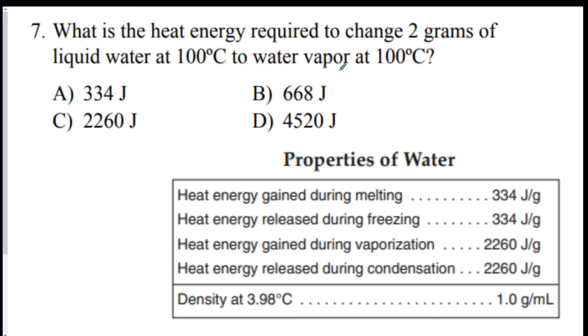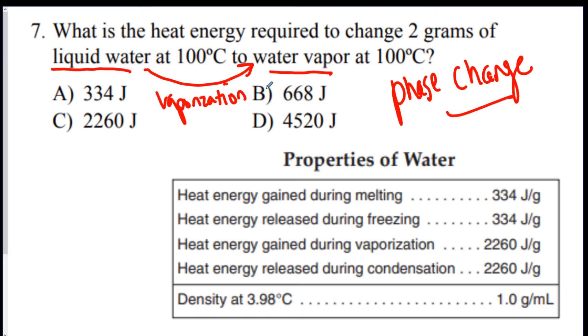Number 7, what is the heat energy required to change 2 grams of liquid water at 100 degrees Celsius to water vapor at 100 degrees Celsius? Now, the reason this is not like the other one is because there is a phase change in this question. The phase change is going from liquid water to water vapor. And if you know your phase changes, this is called vaporization. So, you look on your properties of water chart. You find vaporization, which is right here. It takes 2,264. Remember, 1 gram. They're asking about 2 grams. So, you just do 2,260 times 2. So, you're going to get D. 4,520.